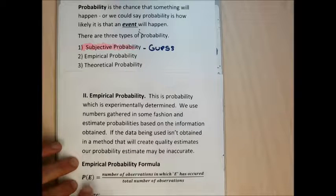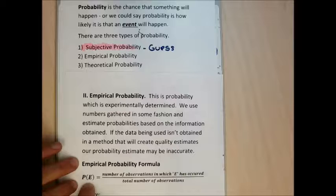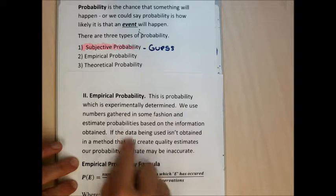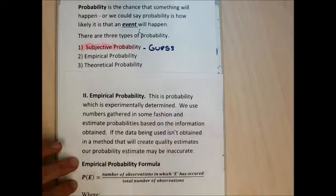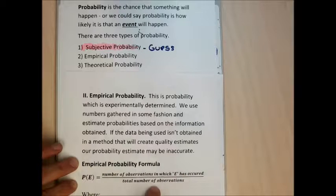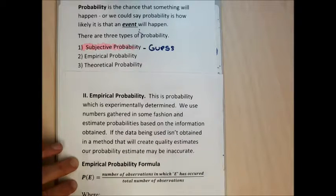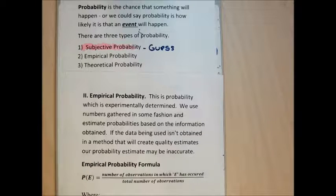The probability of some event happening can be formed by a fraction. In the numerator, it looks at all the data collected for that particular event and finds the number of times that event has occurred, divided by the number of observations you took when you got the data. This is too abstract right now, so let me work through a couple of examples to help you understand empirical probability.